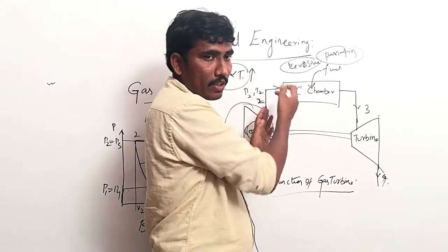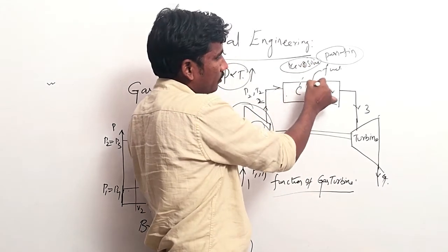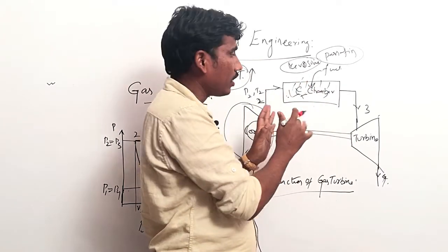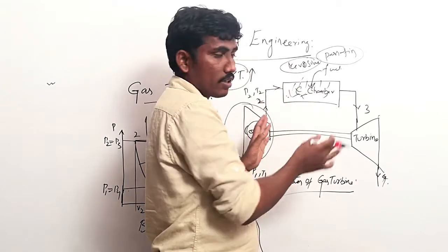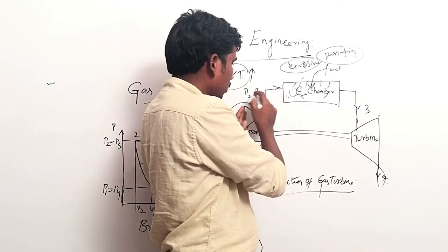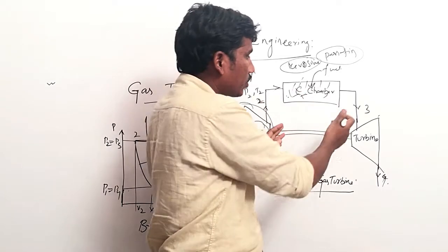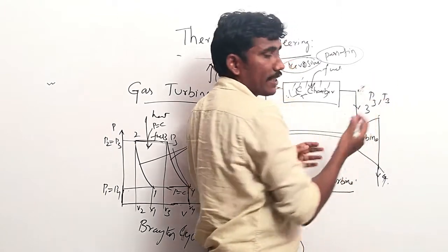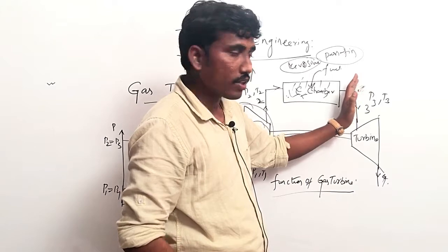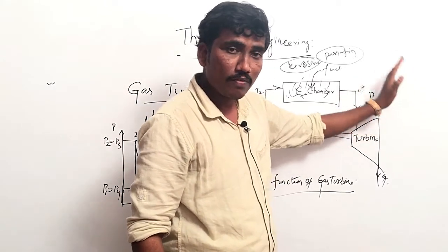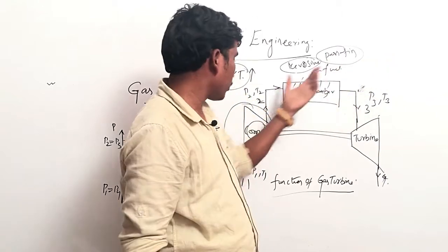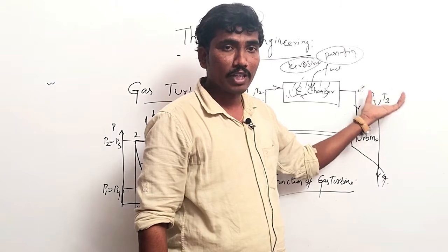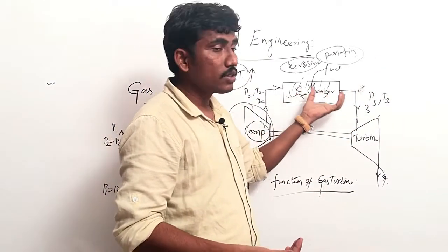The combustion increases the pressure and temperature of the air. So the temperature here will be T3. At this point we get P3 and T3. After the combustion chamber, the pressure and temperature of that air will be more compared to P2 and T2, because we are combusting the fuel here.